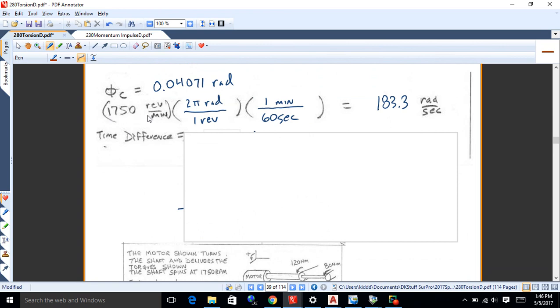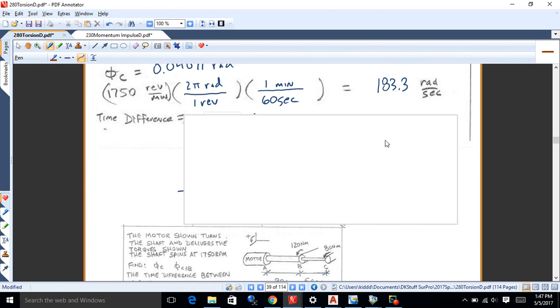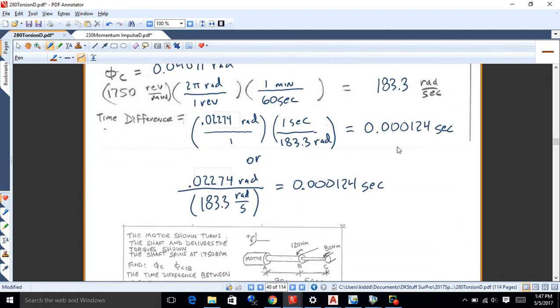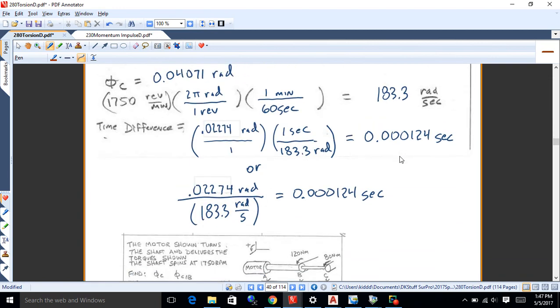I'd take that 1750 revolutions per minute and I'd convert it into radians per second. 2 pi radians per revolution in one minute is 60 seconds. So that 1750 revolutions per minute becomes 183 radians per second. And then I'd look at the twist between B and C because that's really what I'm looking at. So I'd look at the twist between B and C is 0.02274 radians. Okay, so I've got 1 second is 183.3 radians. So I'm going to have a 0.000124 second delay between when B hits the top, the top dead center, and C does. Okay. And that might be significant. It just depends on, you know, what I'm expecting to happen there.